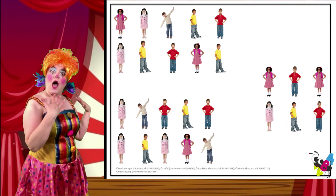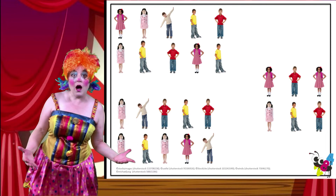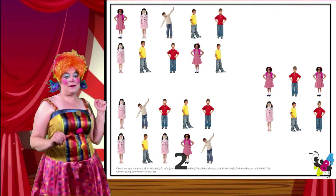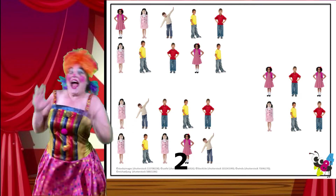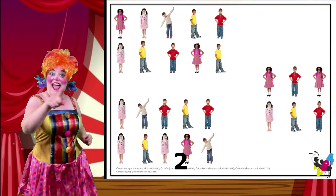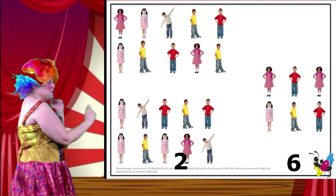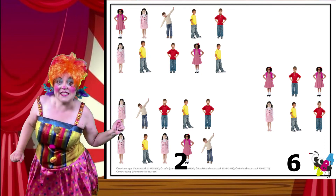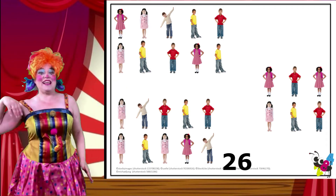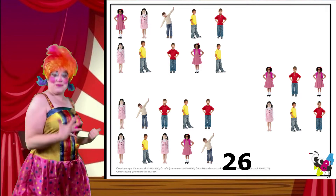So, how many sets of ten are there now? Excellent! There are two sets of ten. And how many ones are there? Excellent! There are six ones. Two sets of ten and six ones make twenty-six! Twenty-six is the same as two sets of ten and six ones!